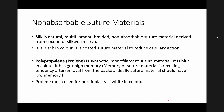Now we will discuss non-absorbable suture materials briefly. Silk is one of them — it is a natural suture. It is a multifilament braided non-absorbable suture material derived from the cocoon of a silkworm larva. It is black in color and is a coated suture material to reduce capillary action. Although classified as non-absorbable, in the long run over many years, being a natural suture, some part of the silk may be resolved.